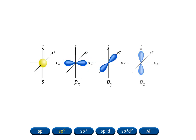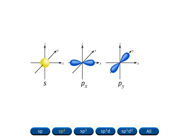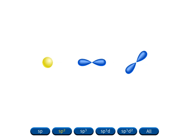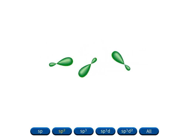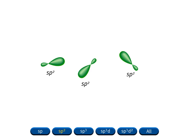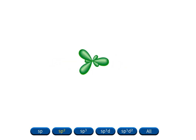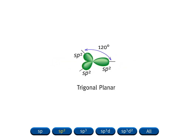Mixing an s orbital with two of the p orbitals generates three equivalent sp2 hybrid orbitals. Note that the number of hybrid orbitals produced is equal to the number of atomic orbitals that are hybridized. The set of three sp2 hybrid orbitals has a trigonal planar arrangement. The angles between the orbitals are 120 degrees.